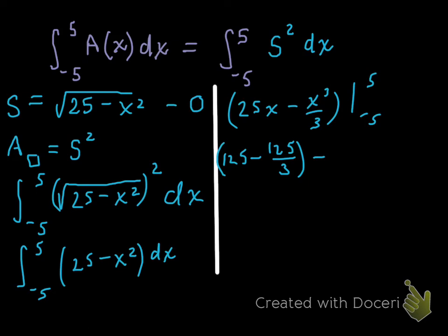Close that quantity and then subtract using FTC1. I now plug in the lower limit of negative five. 25 times negative five yields negative 125. And then, I'm going to cube negative five. Negative five times negative five times negative five is negative 125. Since I'm subtracting that negative, it yields 125 over three. Close it.